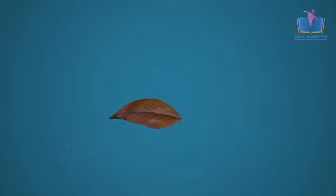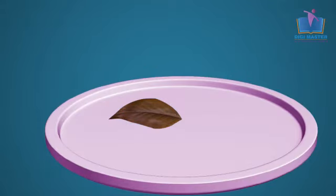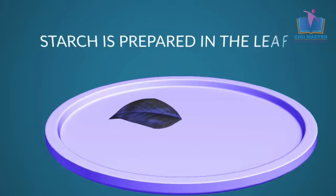Now spread the leaf on a Petri dish. Add one or two drops of iodine solution. The leaf changes to a blue-black color. This demonstrates that starch is prepared in leaves.